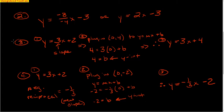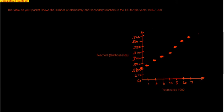But so I'm going to go right on to the next example here, and this is example 4. They have the table on your packet shows the number of elementary teachers and secondary teachers in the U.S. for years 1992 to 1999. I didn't put the table on here. I'm working on being able to import some things. I drew out the graph. They already drew the line, but I want to show you what they did to get that line. So here we go.